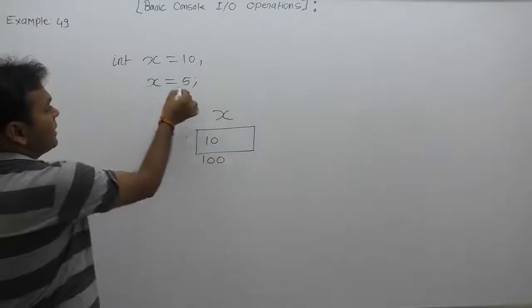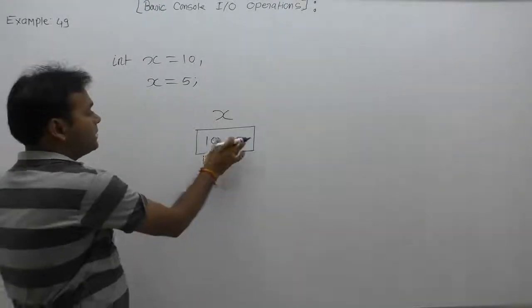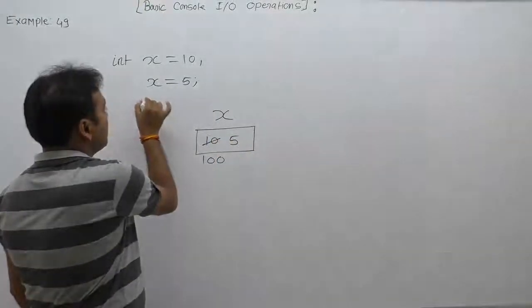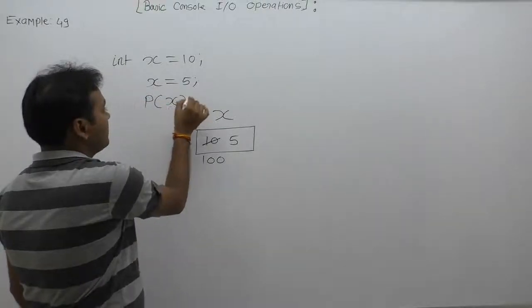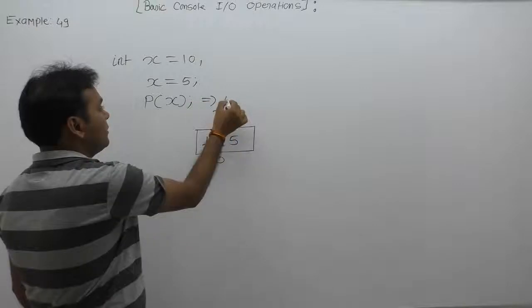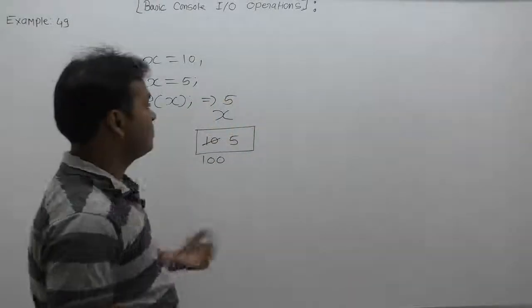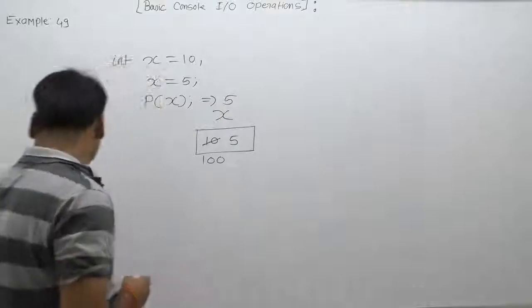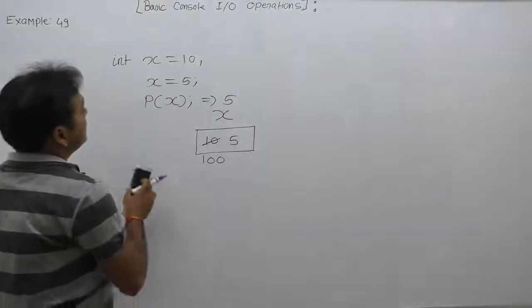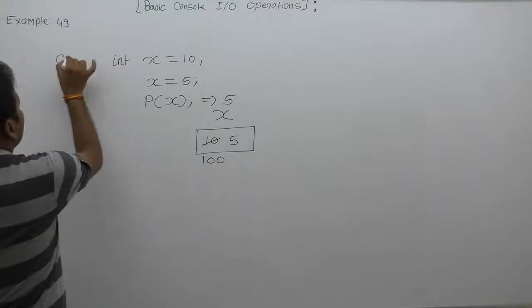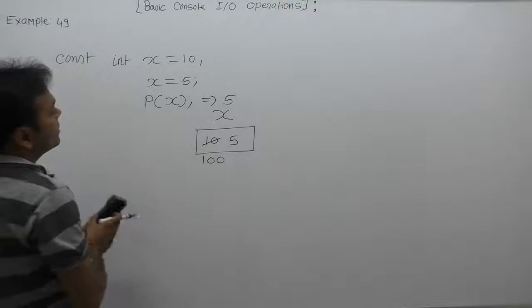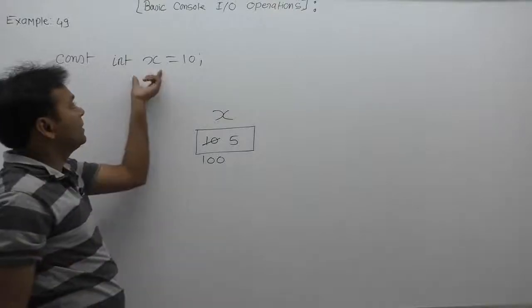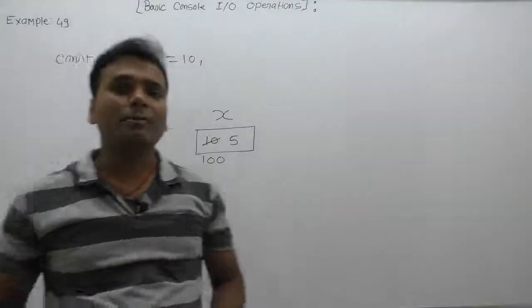Initially x is 10, then if we set x equals to 5, the value 10 is replaced by the new value 5. After that, when you display or print the value of x, the current value displayed is 5. But if you want to declare a variable whose value should not change, you can make it a constant using the const keyword. Using const makes x a constant variable, not a normal variable.